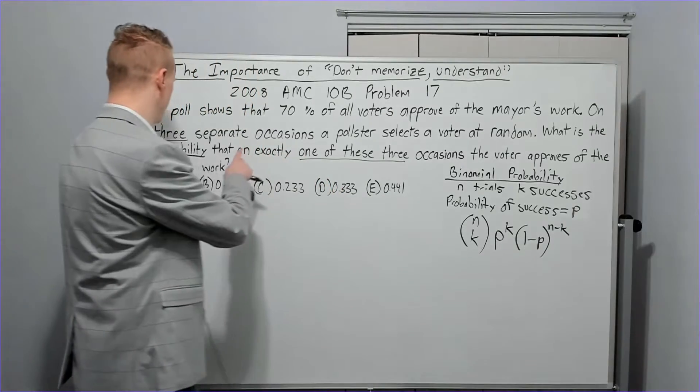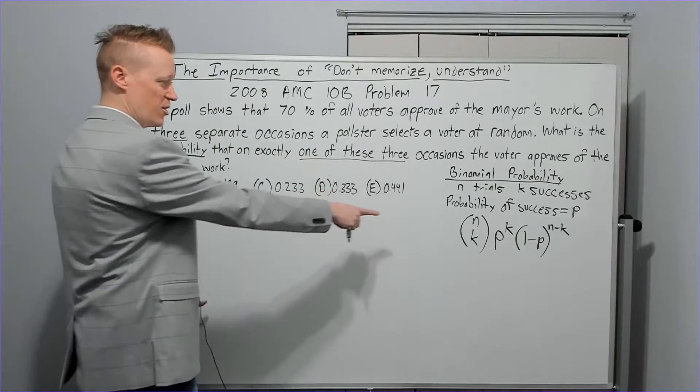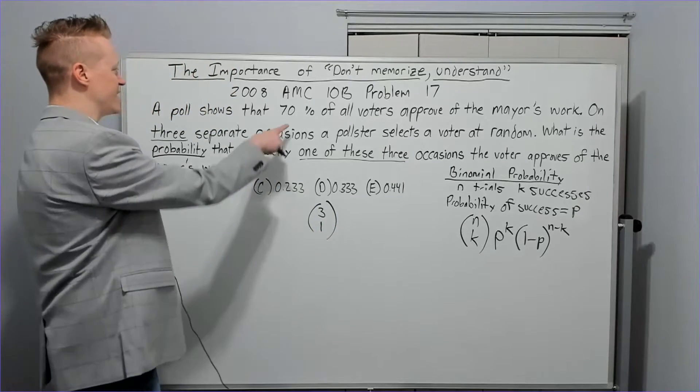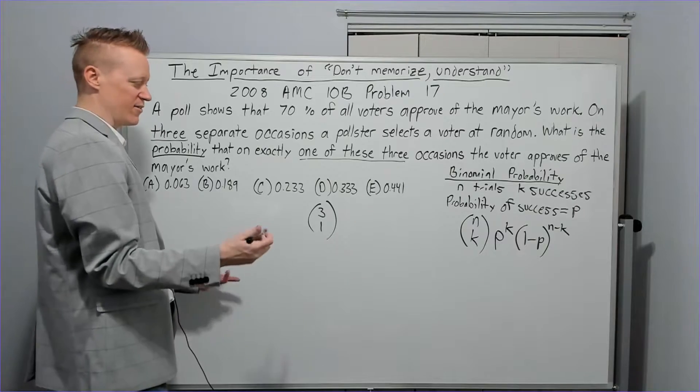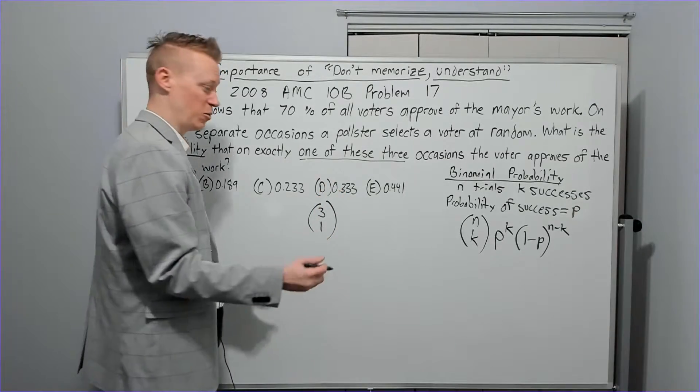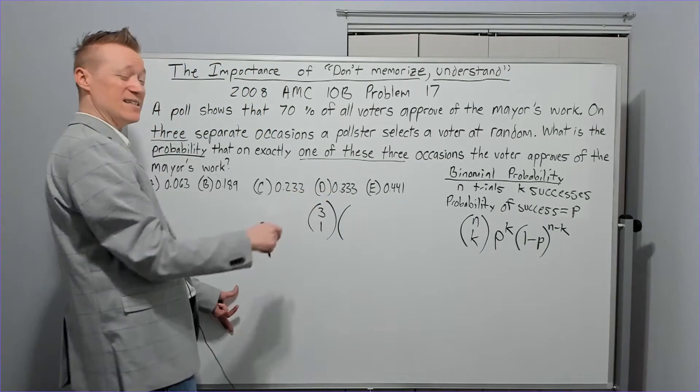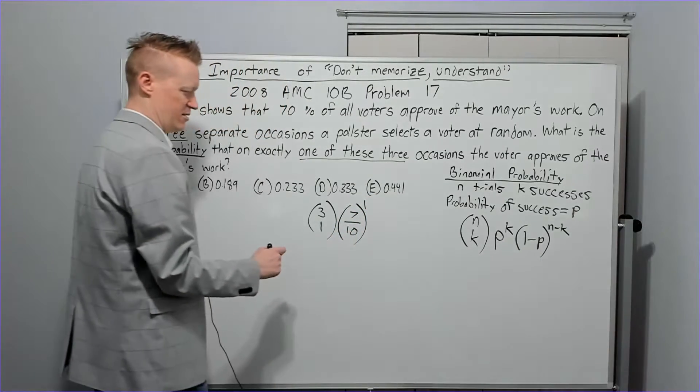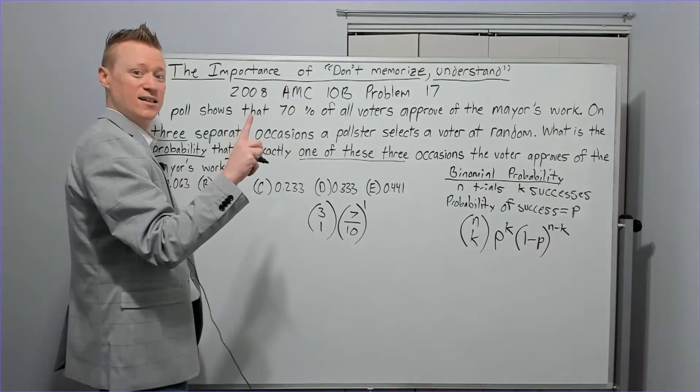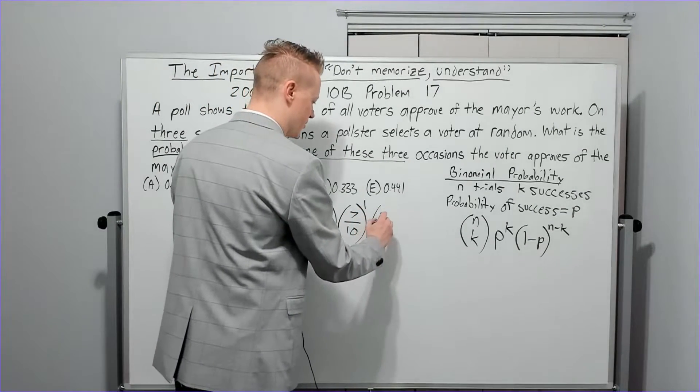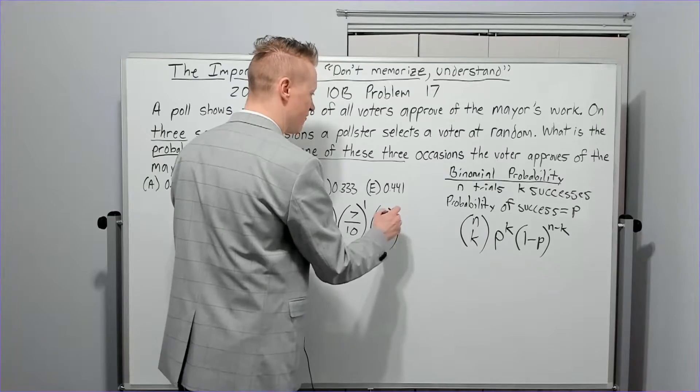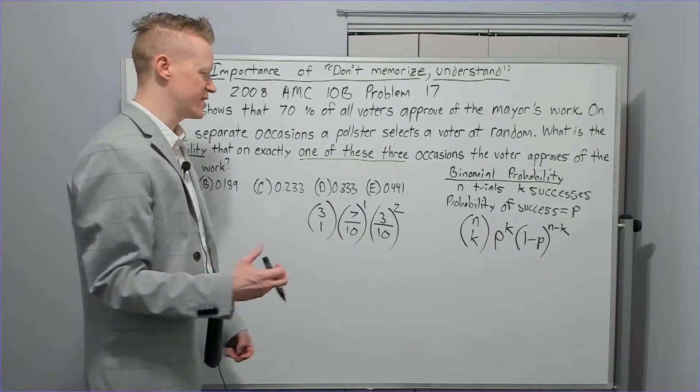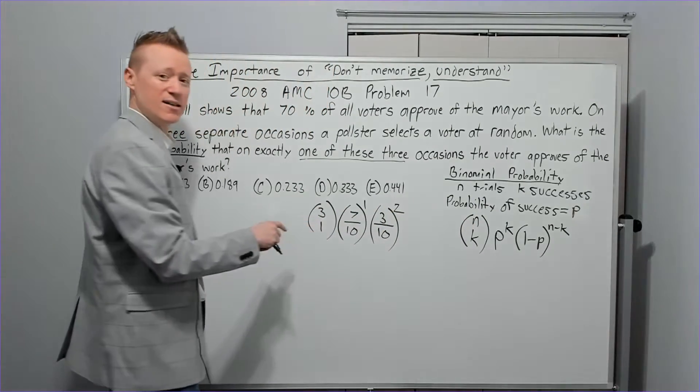So let's say that I've got in this problem here, we want three separate occasions, so there's three trials. I want one success. One of these three, my probability, what does it say? 70% of all voters approve. So that's seven out of 10. That's the chance of success, if you will. So you could put 0.7. Looking at the answers, I see decimals. I'll keep it as seven over 10 for now. And then that's the first to the first power. Why first power? Because we want one success. The chance of failure is one minus seven over 10, 30% chance. So three out of 10 chance for a failure of somebody to approve to the second power. So we haven't understood yet. We've just written what the formula says. What did I get to? It's n minus k, three minus one.